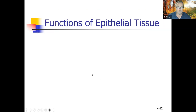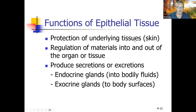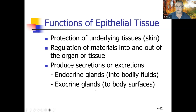Functions of epithelial tissue include protection of underlying tissues — for example, skin protects the tissue below it. It regulates materials into and out of an organ, such as the epithelial lining of your stomach regulating water and alcohol entering your blood. It also produces secretions or excretions. Endocrine glands ('endo' means inside) produce secretions that go into bodily fluids like blood. Exocrine glands go to body surfaces — for example, sweat. 'Exo' means outside.